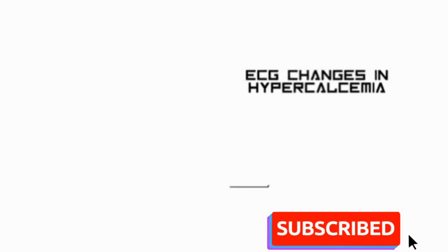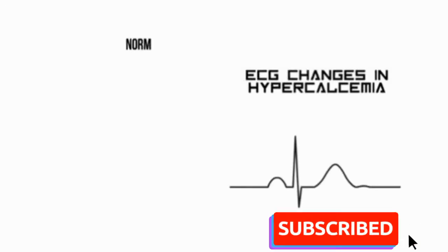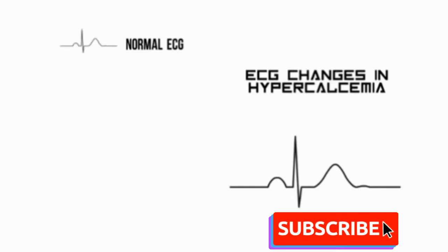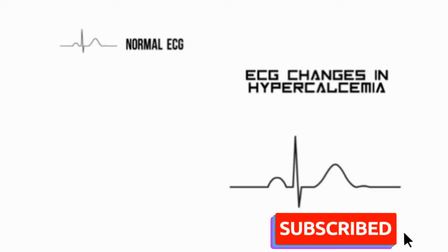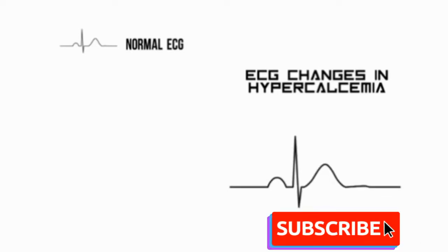ECG changes in hypercalcemia. ECG changes that can occur during hypercalcemia are poorly correlated with exact serum levels, which is why I won't be giving you numbers. However, we do know that as serum calcium rises, the QT interval shortens.